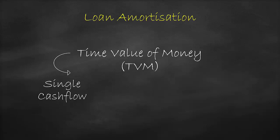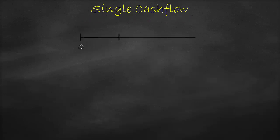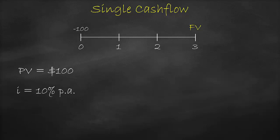We have a single cash flow formula and an ordinary annuity formula. With the single cash flow, let's assume we deposit $100 today for three years at an annual interest rate of 10%. What would be the future value at the end of year three? We have the present value of $100, the interest rate of 10% per annum, the number of periods is three years, and the future value is the unknown variable.